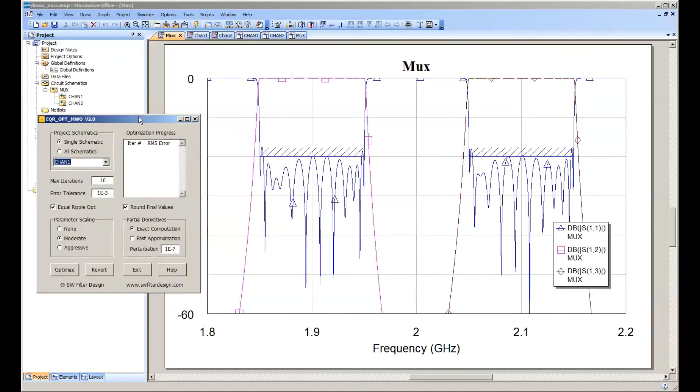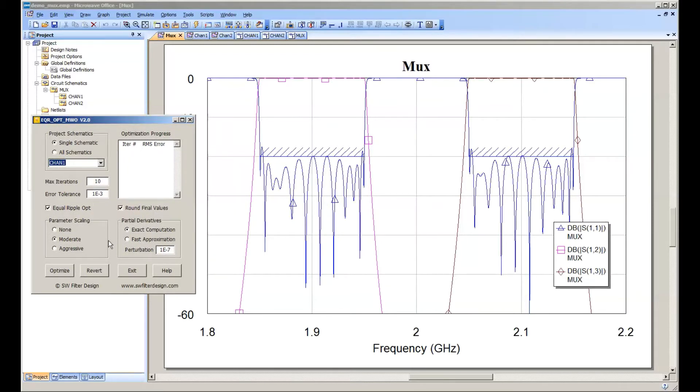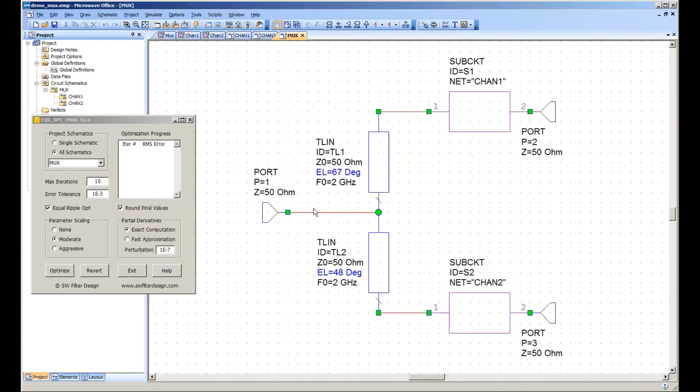And generally, we're looking for a good match at band center. And if we can realize a starting point with pretty good match at band center, in general, the optimization will pull in. So let's give it a try with this starting point here. And if we open up the optimization program, the interface is very similar to the old program. The only thing we've changed here is it's a little bit different when it asks you for what schematic you want to work on. So in this case, we've organized our project with three schematics. We've got the individual channels and the top level diplexed schematic. So in this case, we'll tell it to look for variables on all the schematics. And we'll tell it that the top level schematic is the one called mux. So it assumes that port one on that top level schematic is the common junction. And that's basically all we need to tell it.